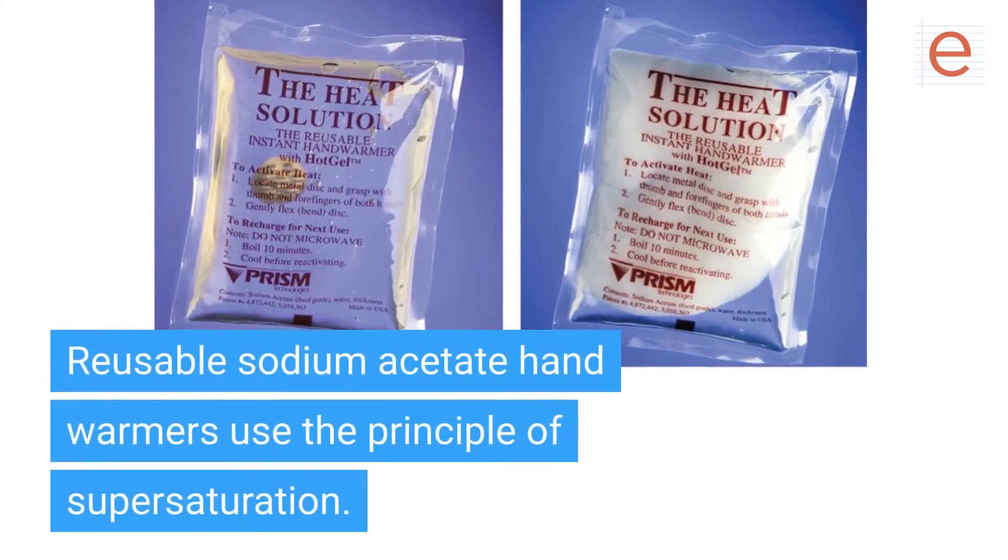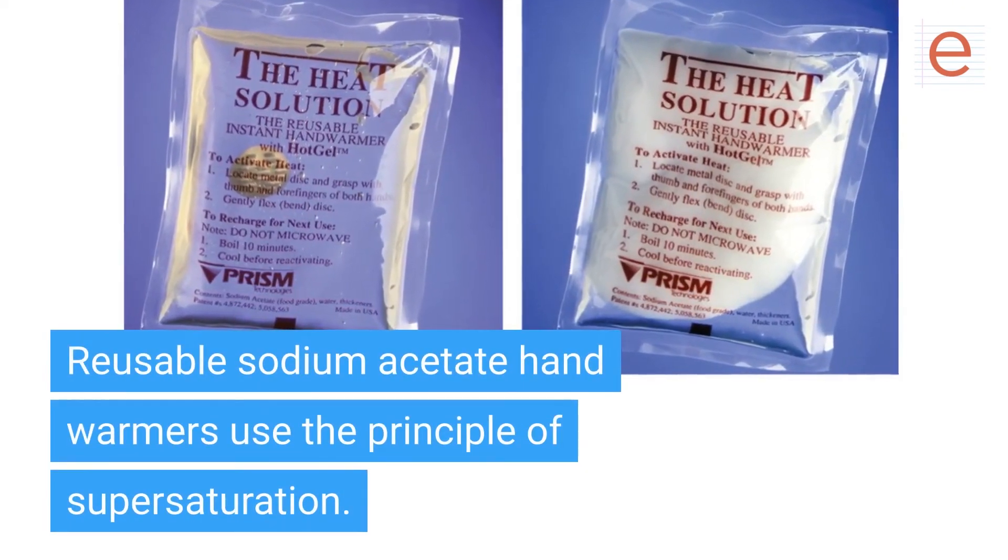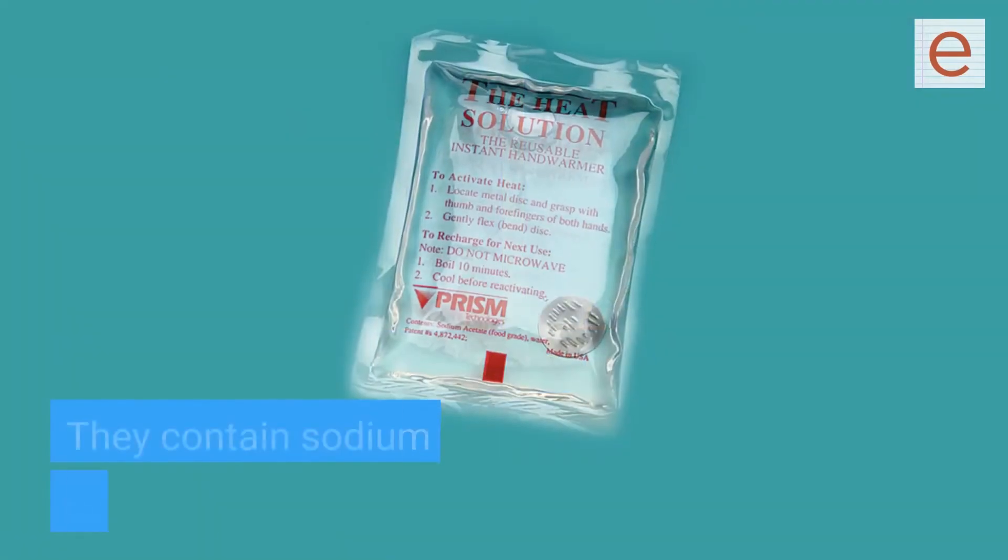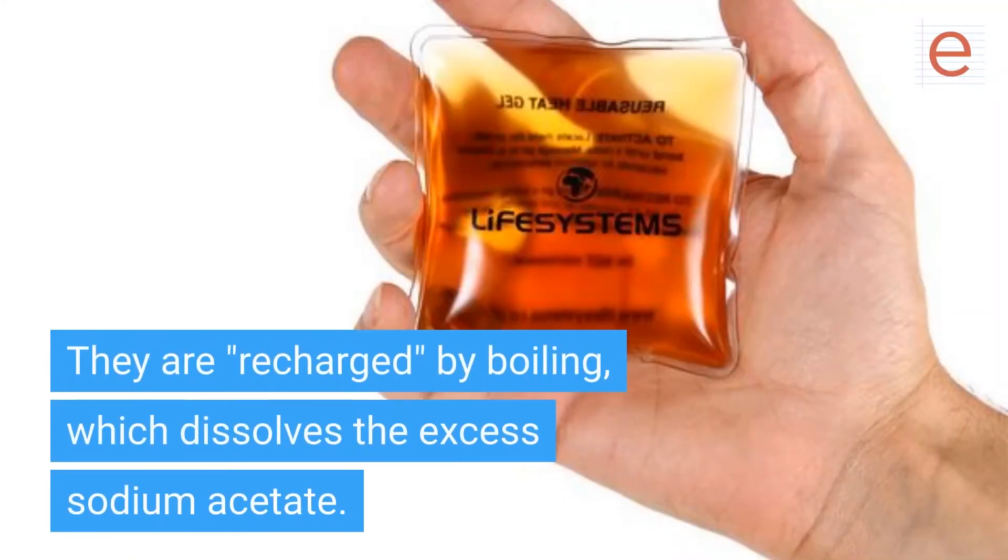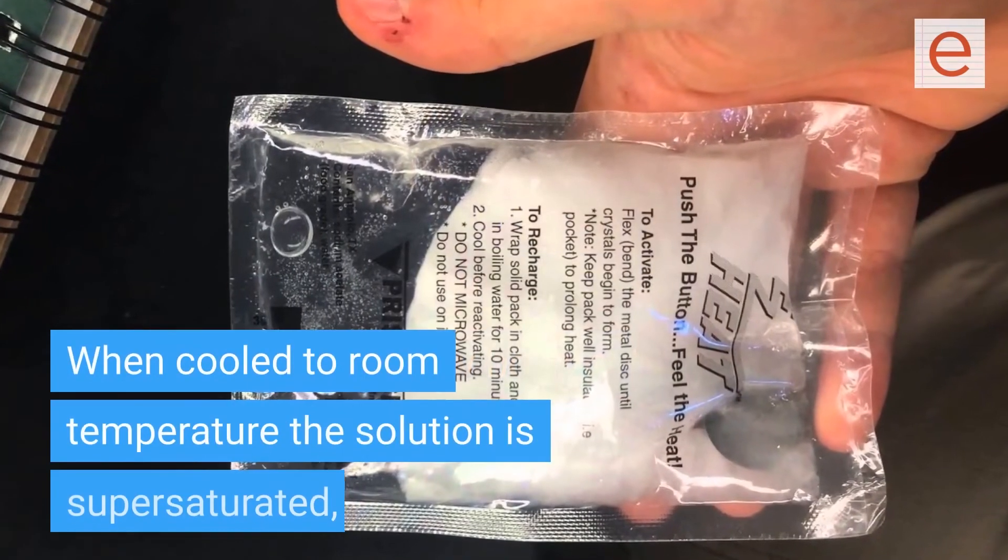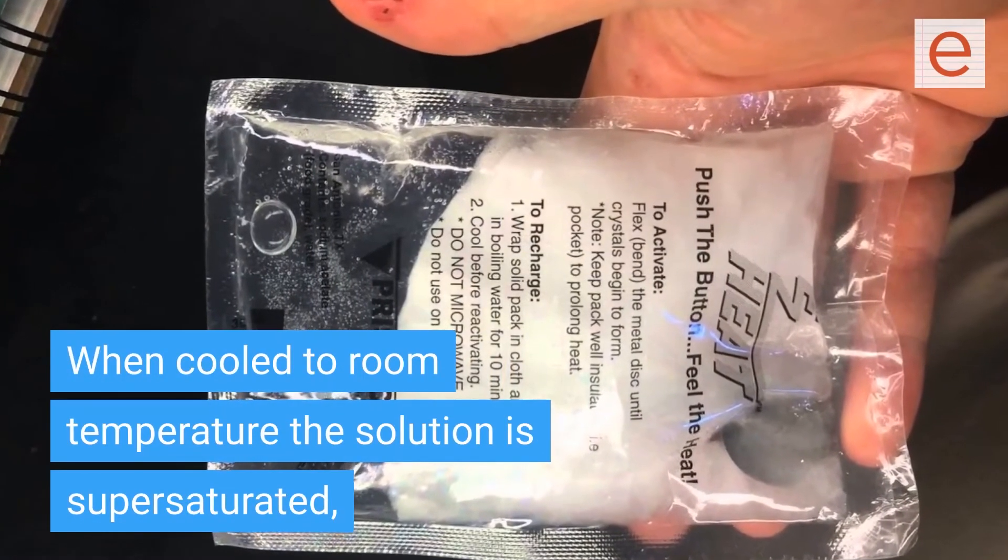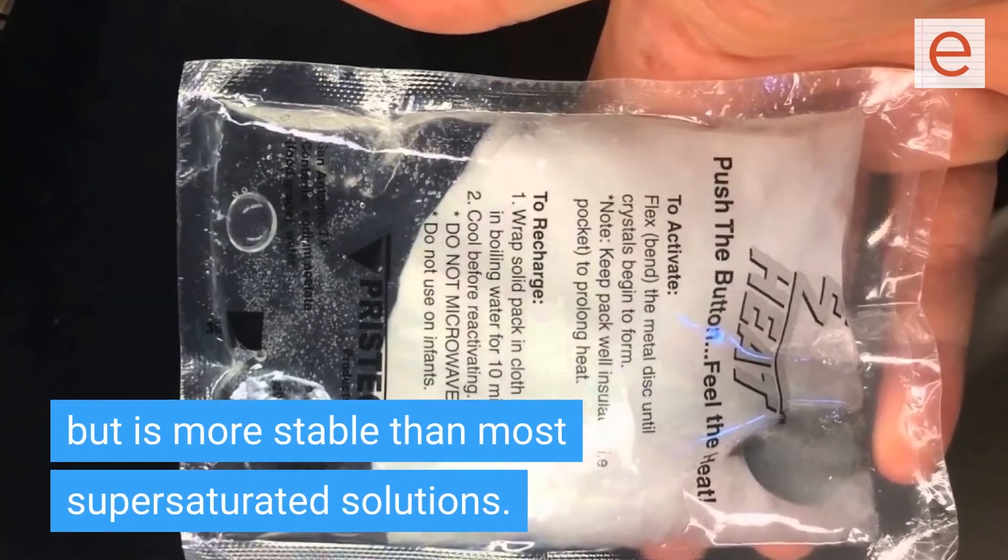Reusable sodium acetate hand warmers use the principle of supersaturation. They contain sodium acetate in water in a sealed packet. They are recharged by boiling, which dissolves the excess sodium acetate. When cooled to room temperature, the solution is supersaturated but is more stable than most supersaturated solutions.